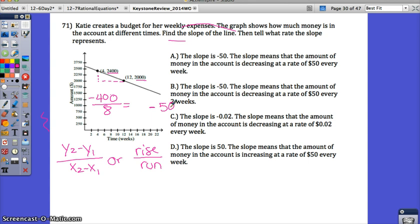Now let's interpret what that means. Remember that the slope is Y over X. So it's dollars to weeks. So this represents a negative 50 or negative 50 over 1, which is going to represent the change in the money to the change in the weeks. Read your options here. Well, you can rule out C and D because your slopes are not negative 50. Read A and B then. The slope is negative 50. The slope means the amount of money in the account is decreasing at a rate of $50 every week. The slope is negative 50. The slope means that the amount of money in the account is decreasing at a rate of $50 every 2 weeks. Well, it's $50 every 1 week. If it was $50 every 2 weeks, that would really be a slope of $25. The one that matches your answer is A.